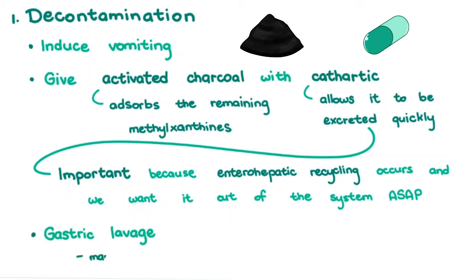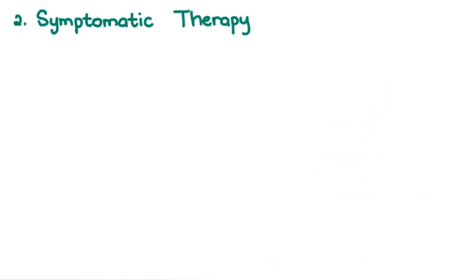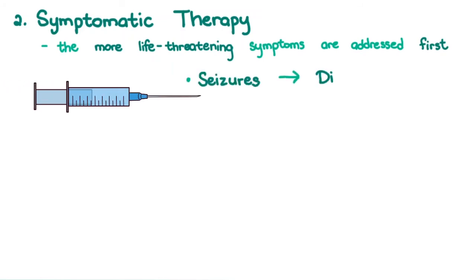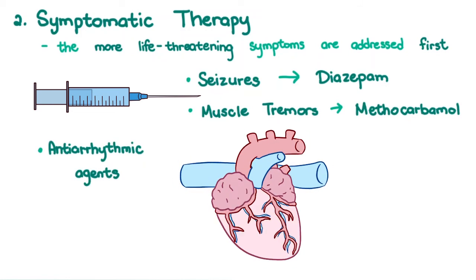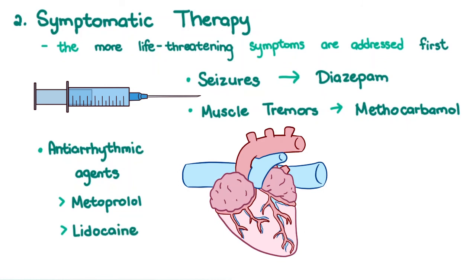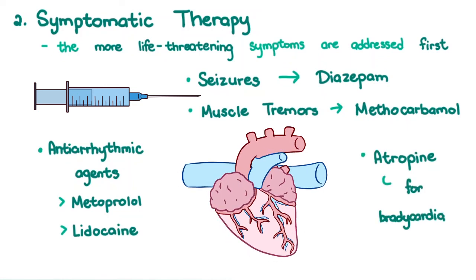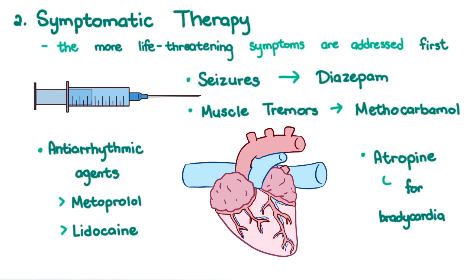Gastric lavage may be performed on unconscious patients. For symptomatic therapy, the more life-threatening symptoms are addressed first. Seizures can be controlled with diazepam, and muscle tremors with methocarbamol. Anti-arrhythmic agents may be given, such as metoprolol and lidocaine. Atropine would be of benefit for any bradycardia, and other clinical signs are treated as they arise.